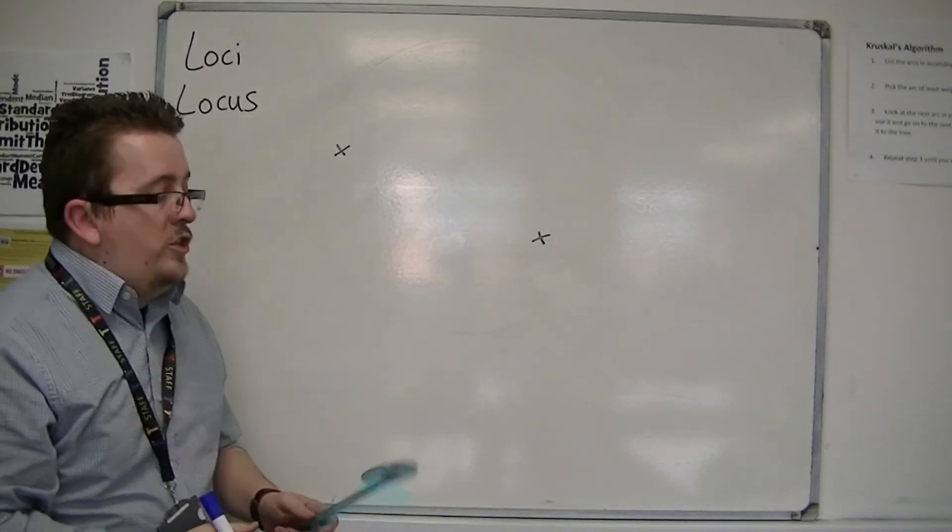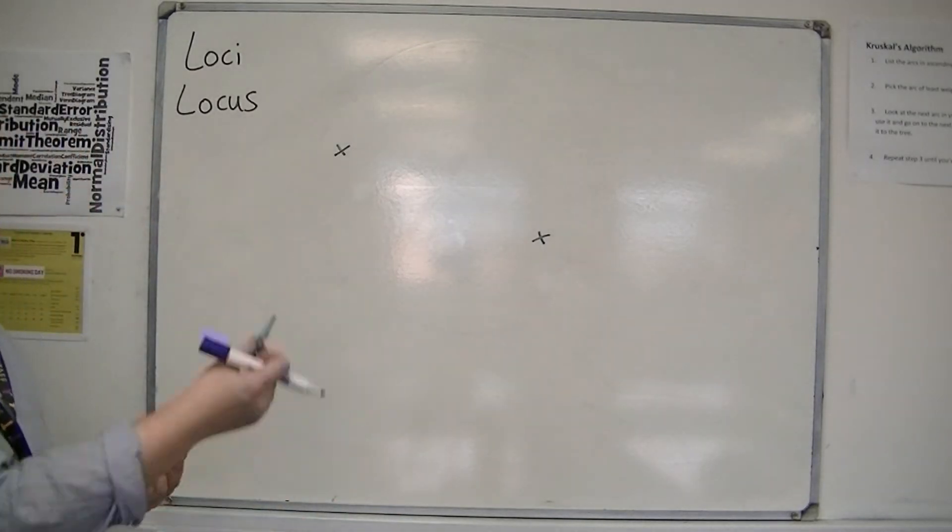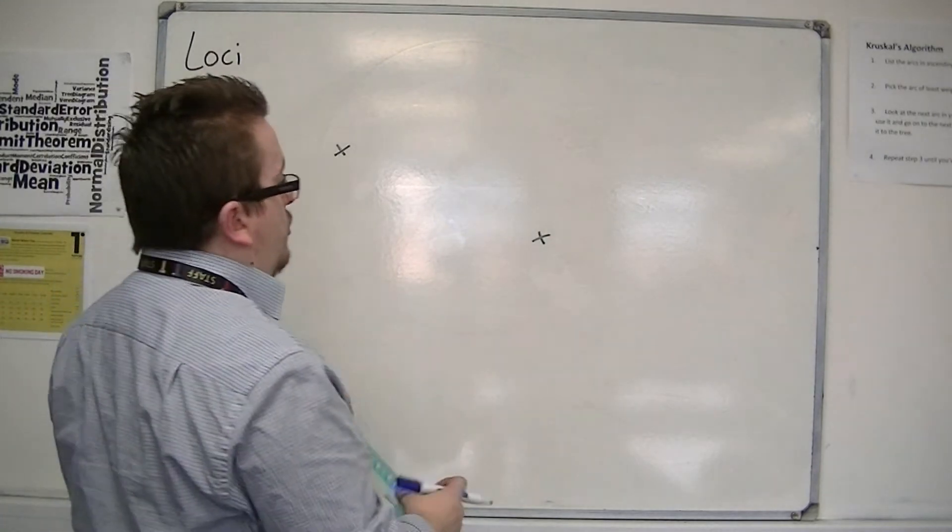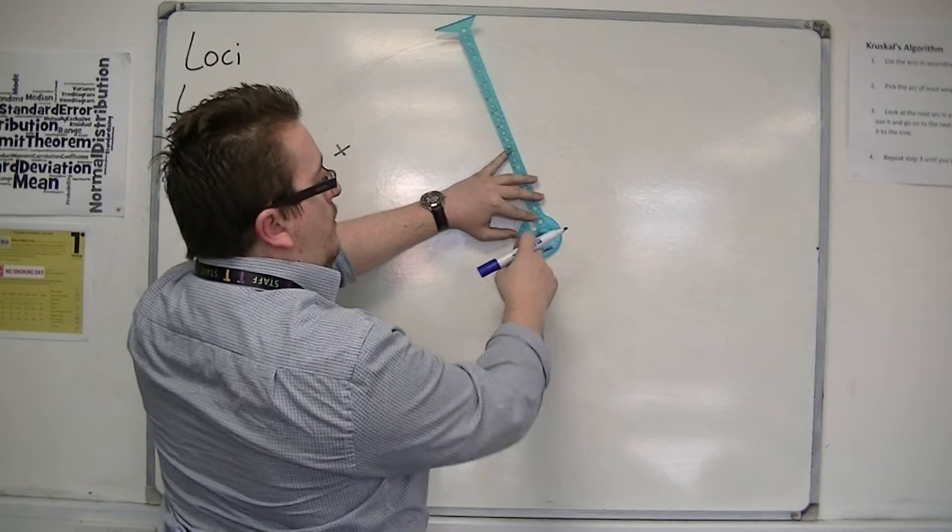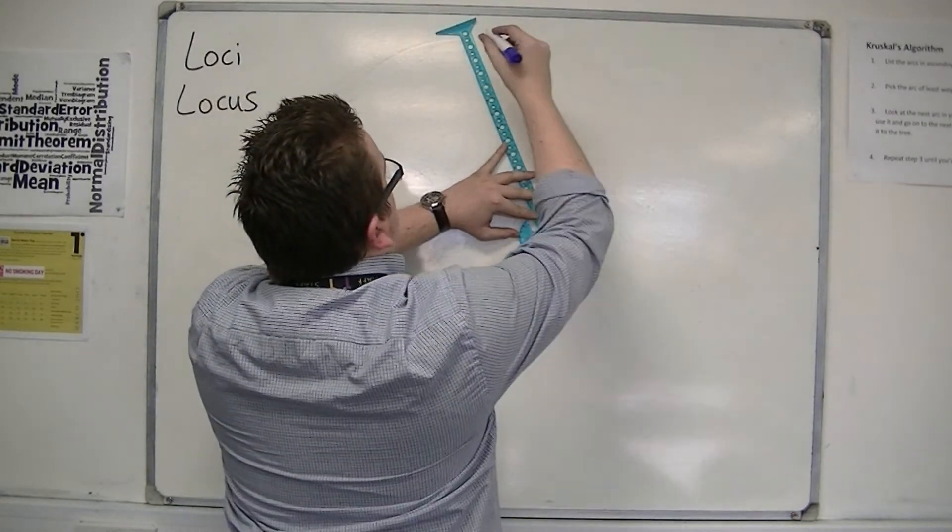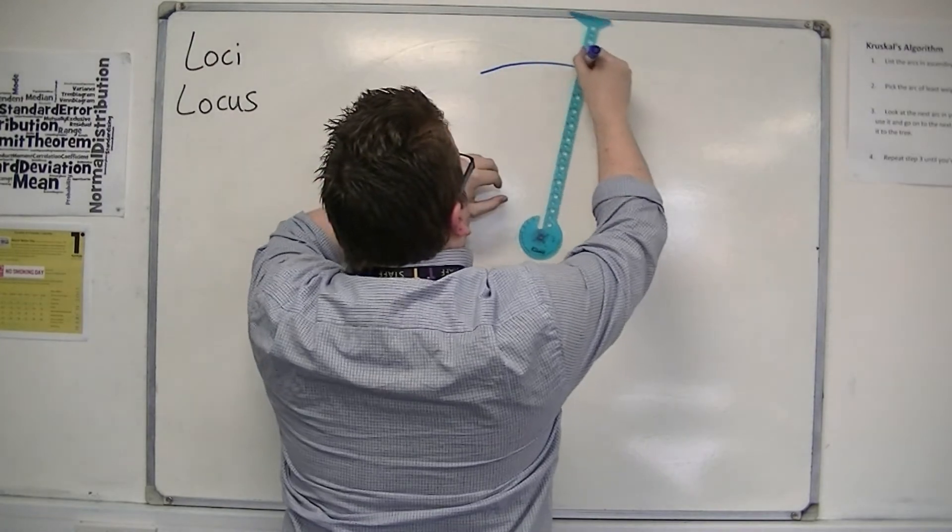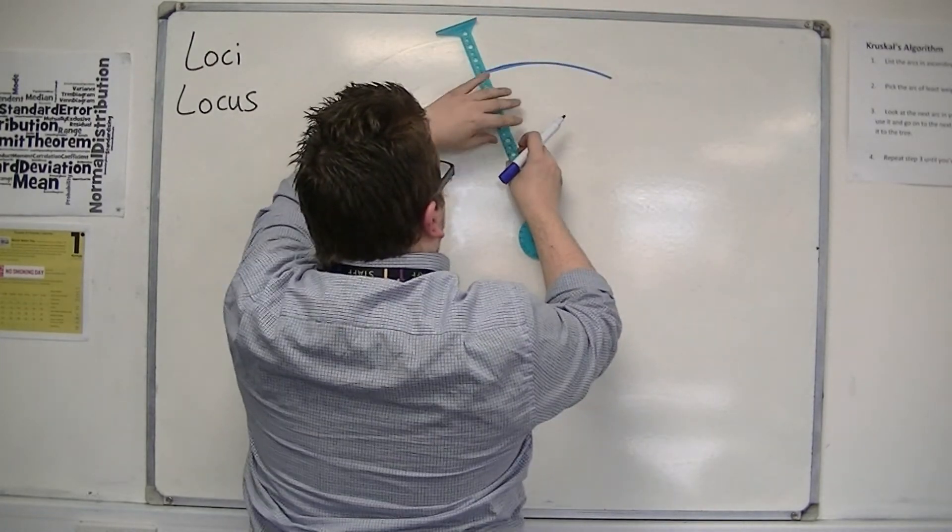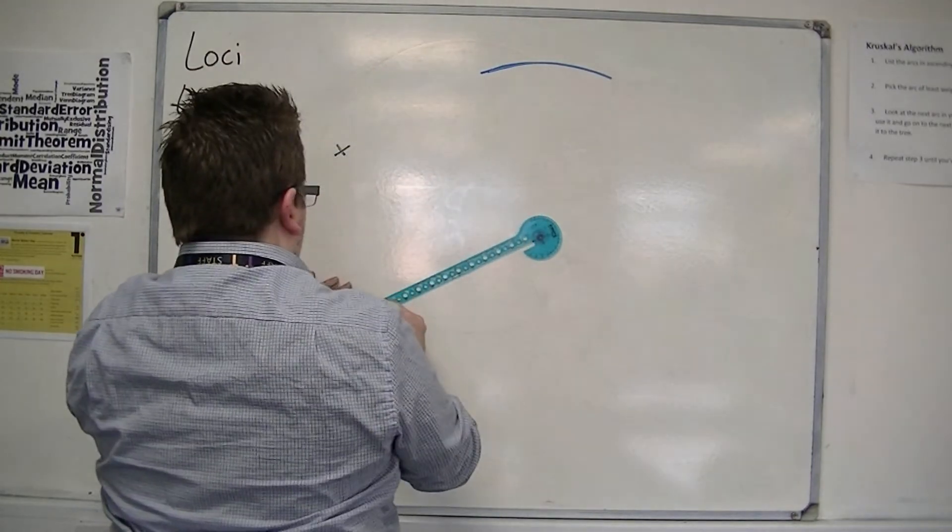Now the way to actually draw this is using a pair of compasses. This is my whiteboard version. Now the way to do it, putting your sharp end of the point on the first point, and making an arc with a pencil. Do it there and down there.